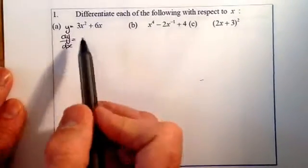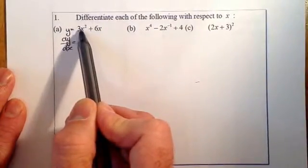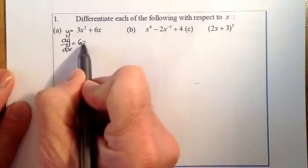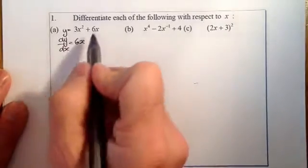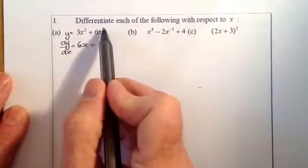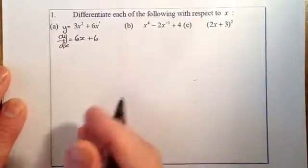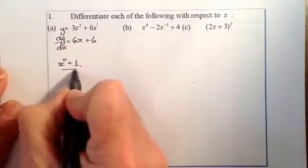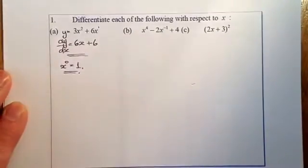The process for differentiation: multiply the coefficient by the power — so 2 times 3 gives 6 — then reduce the power by 1, giving x to the power of 1. For the 6x term, the power is 1, so 1 times 6 gives 6 and x to the power of 0, which equals 1. So the derivative is 6x + 6.